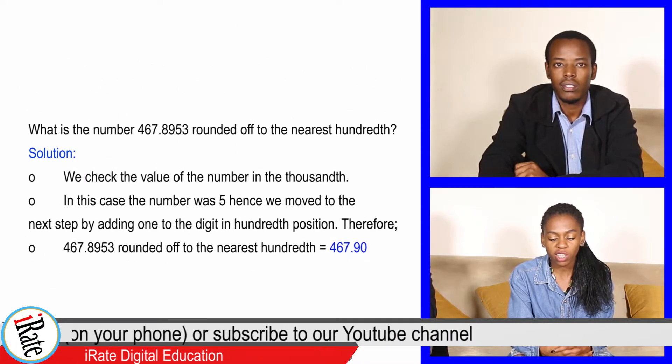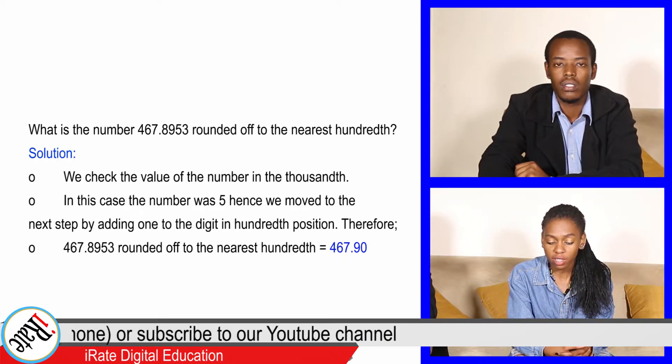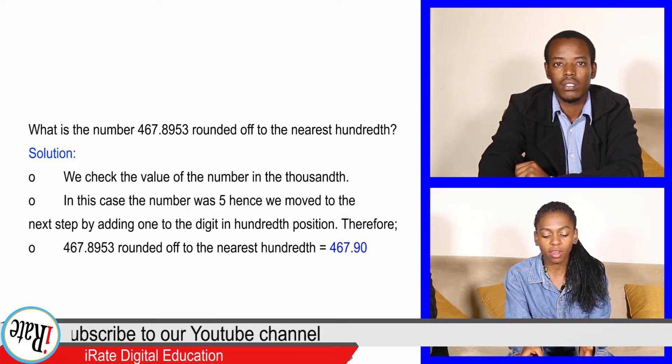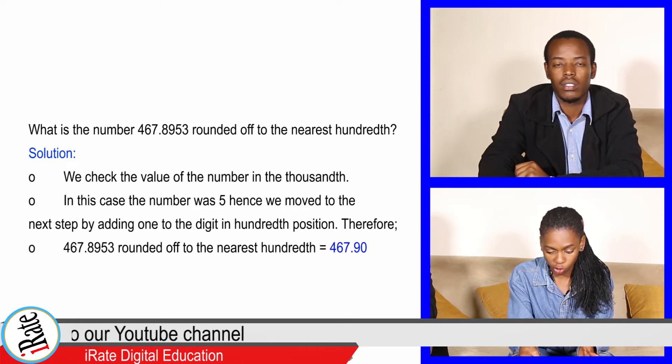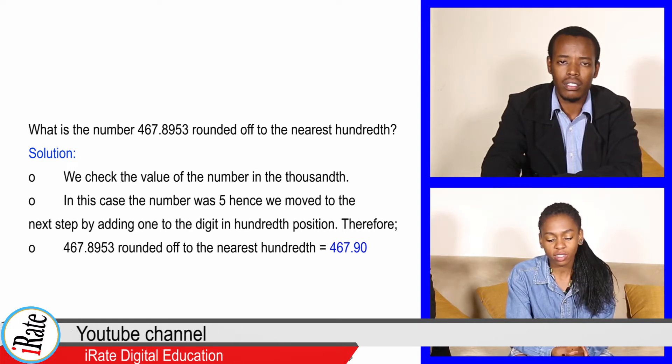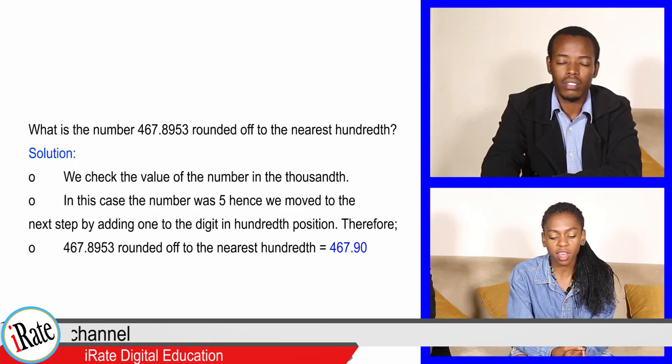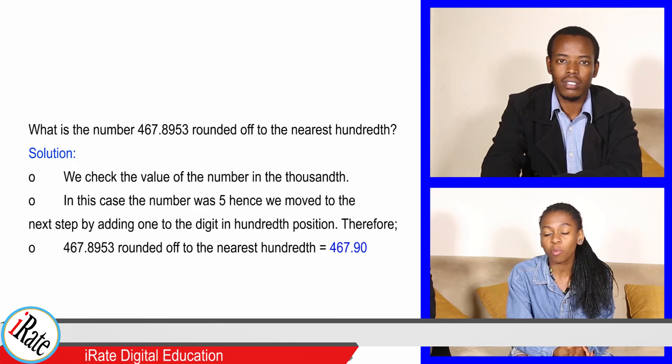Solution: We checked the value of the number in the thousands. In this case, the number was 5. Hence, we moved to the next step by adding 1 to the digit in hundredth position. Therefore, 467.8953 rounded off to the nearest hundredth is equal to 467.90.